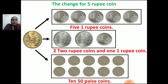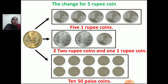The second change for 5 rupees: if you have 2 rupee coins and 1 rupee coins, how many do you need? There are 2 two-rupee coins and 1 one-rupee coin shown. Two plus 2 is 4 rupees, and 4 plus 1 is 5 rupees. So you need 2 two-rupee coins and 1 one-rupee coin to make 5 rupees.